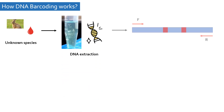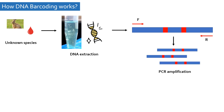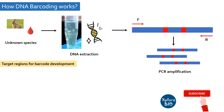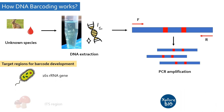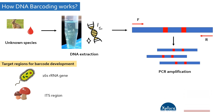After this, utilizing a specific primer set, a few hundred bases long target region of the nuclear, mitochondrial, or chloroplast genome is amplified using PCR. The target region chosen for PCR amplification depends upon the organism type. For example, the 16S ribosomal RNA gene is the target in bacteria. For fungi, it is the internal transcribed spacer region, or ITS region. The rbcL gene of the chloroplast and the matK gene of mitochondrial DNA are suitable for developing DNA barcodes in plants.